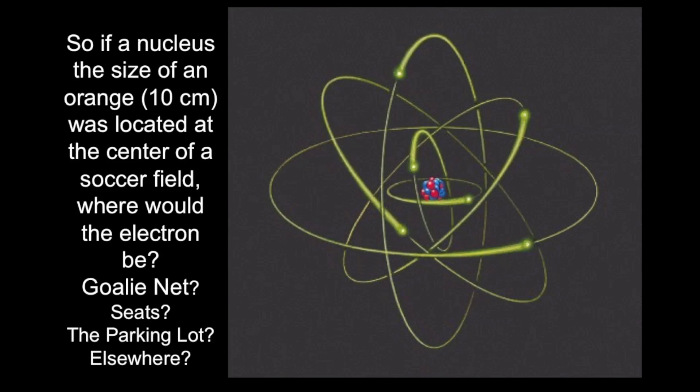Let me give you an idea of how to think about this. If the nucleus of an atom were the size of an orange, let's call that 10 centimeters across, then we place that orange in a soccer field, say here on our college campus, where would the electron be? The goalie net? The seats? The parking lot? Elsewhere?